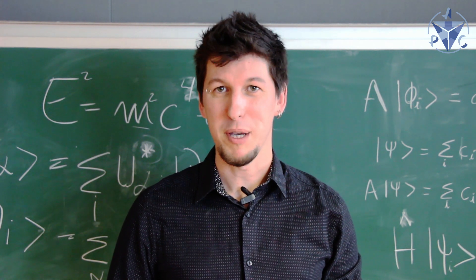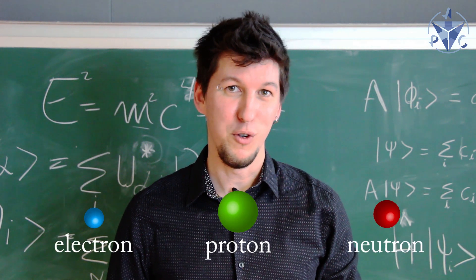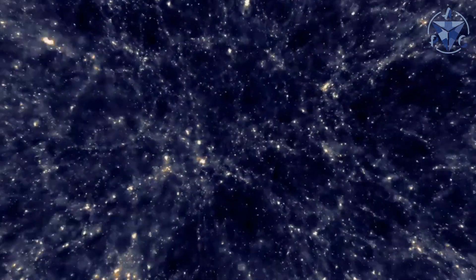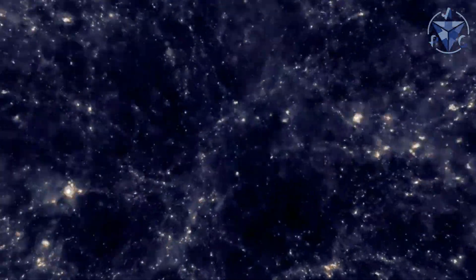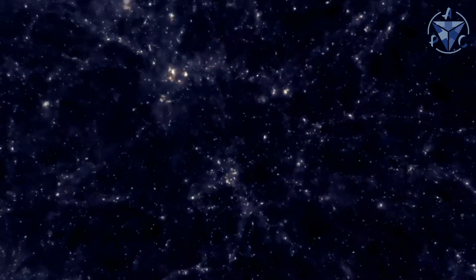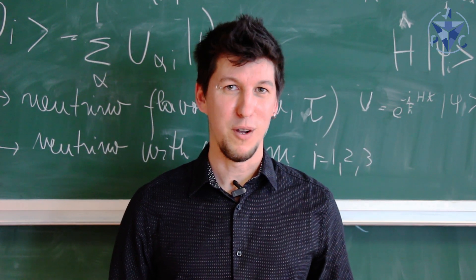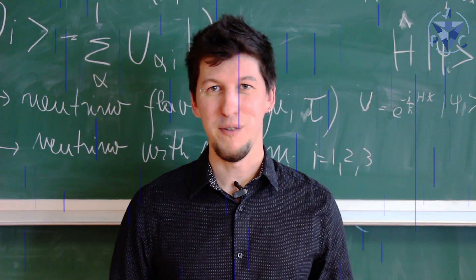Neutrinos are subatomic particles, just like the electron, the proton or the neutron, but they're special. In fact, neutrinos are the most abundant fermions in the universe, but they interact so weakly that billions of neutrinos are going through your body right now and you don't even notice.